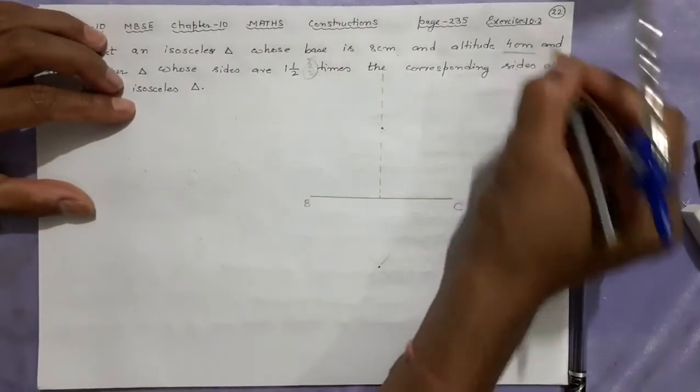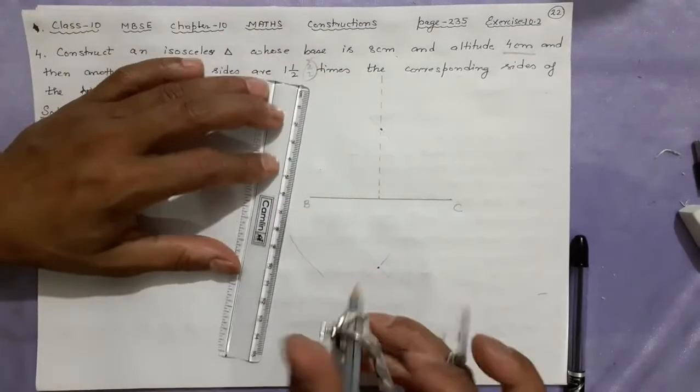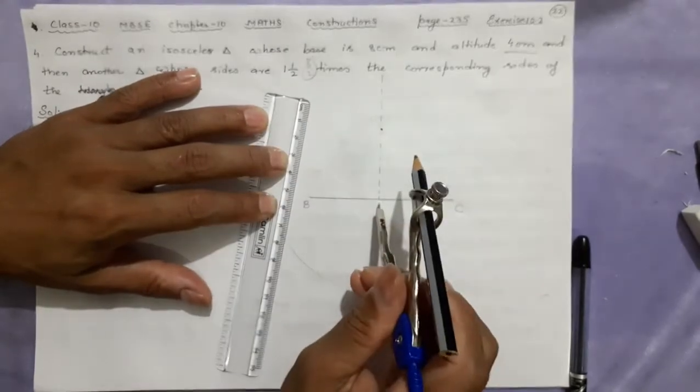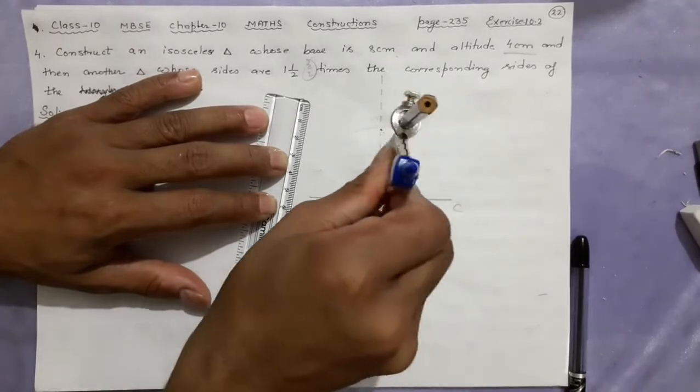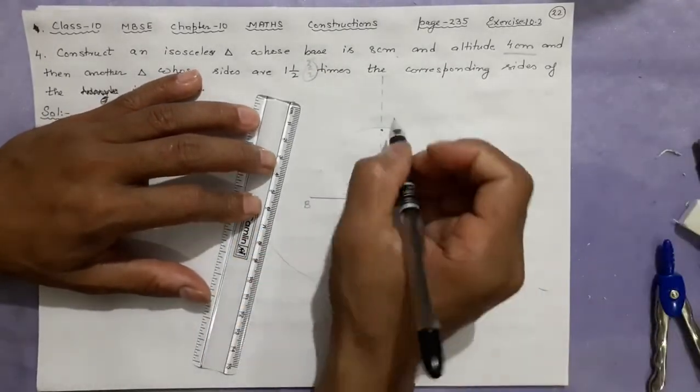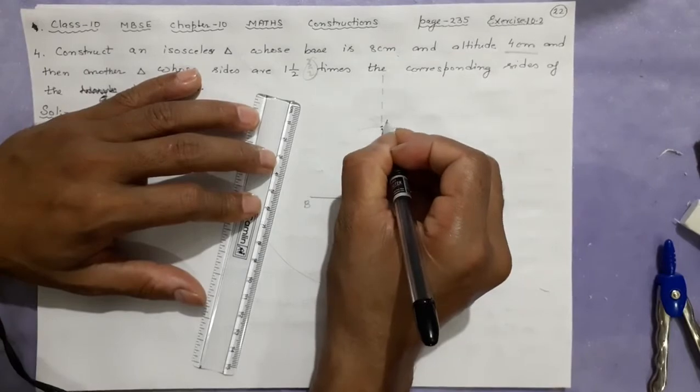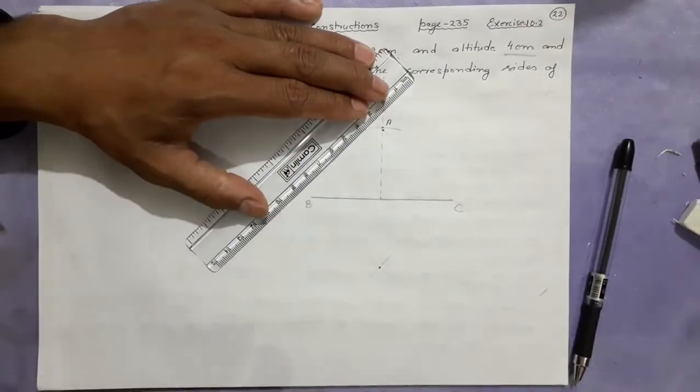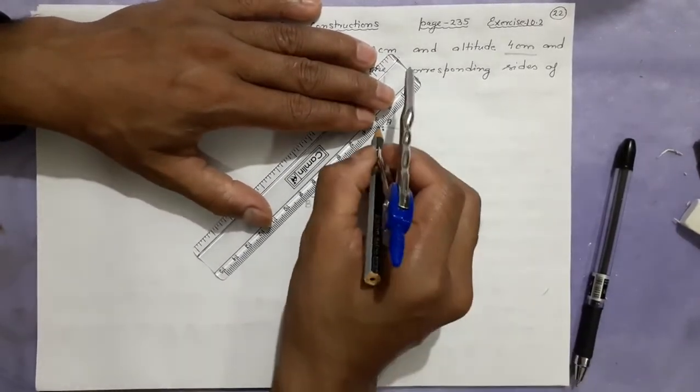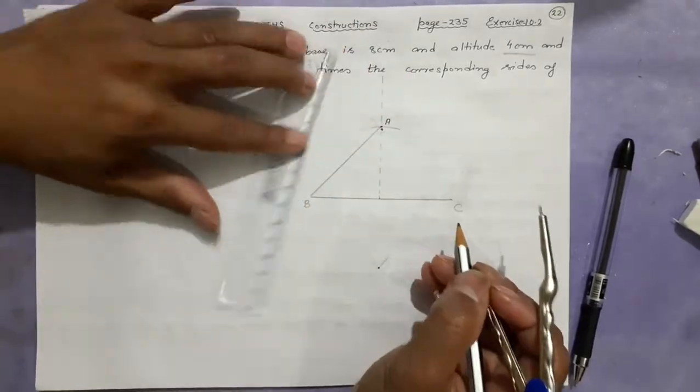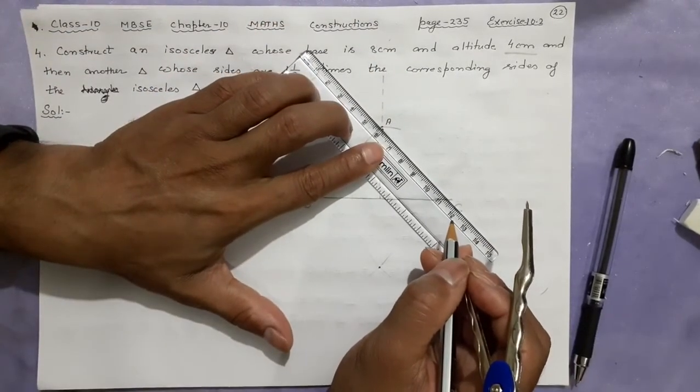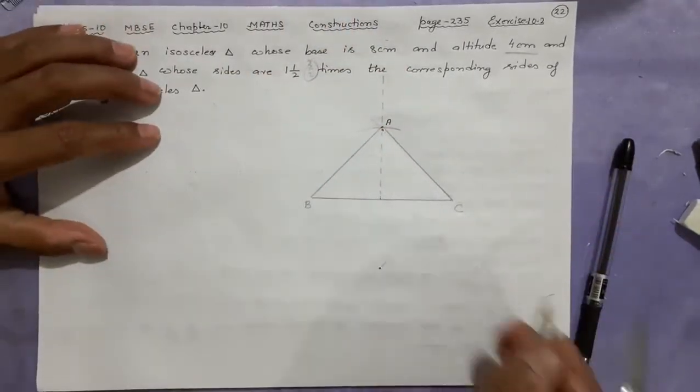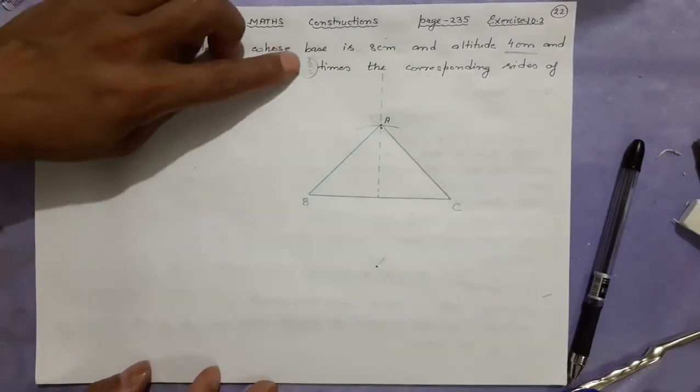No need to join this because we need this triangle. Now this is the altitude I made, but altitude they say is only 4 centimeters. So 4 centimeter altitude is what? Take this from here to here. Remember I'm just making the triangle only now, our work still remains. Join this A here. Now join this A with the C. Your triangle is ready.